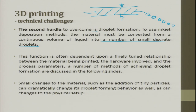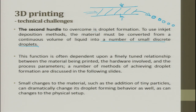The droplet size plays a very important role. If the droplet size is large, unnecessarily large amounts of binder will be used. If the droplet size is small, it has to be synchronized with the feed rate — if not done, it is prone to defects. This function is often dependent on a finely tuned relationship between the material being printed, the hardware involved, and the process parameters. Small changes in material properties, such as the adhesion of tiny particles, may drastically change droplet formation behavior. If nanoparticles are dispersed in the droplet, it becomes a completely different challenge to operate.